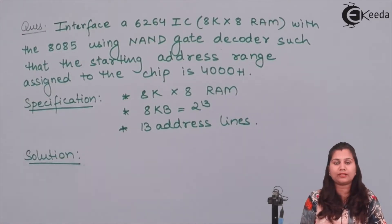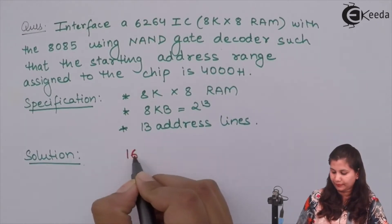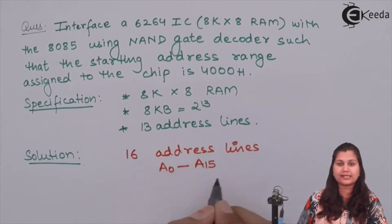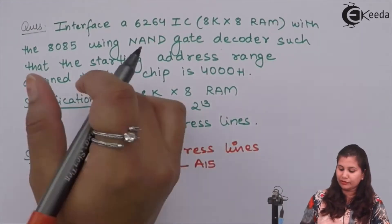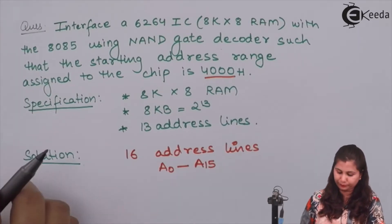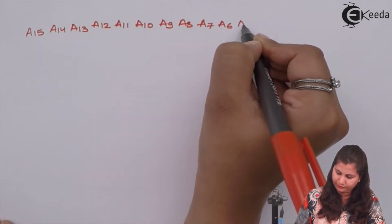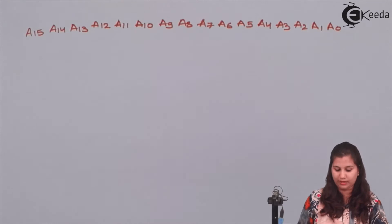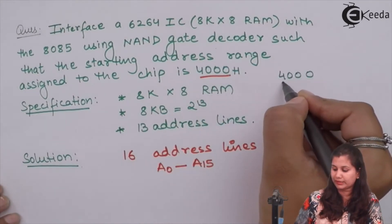Now we have to interface the 8085 microprocessor with the memory chip. The 8085 has 16 address lines from A0 to A15. Out of these 16 address lines, 13 address lines are used for the memory locations and the starting address of the memory chip is given as 4000H. So if we write these 16 address lines, what will be their value? The starting address is 4000H, which is in hexadecimal notation, where one digit represents 4 bits.